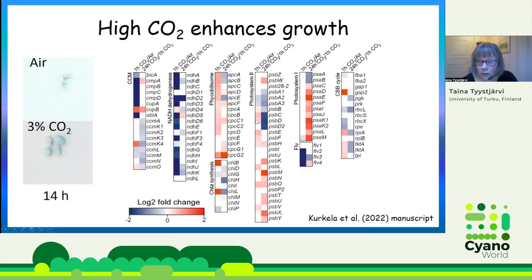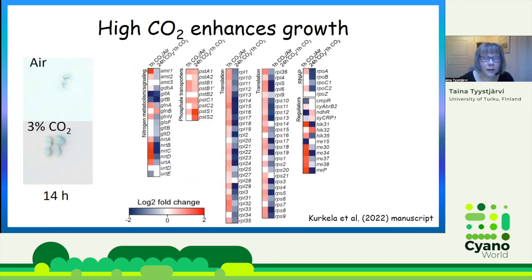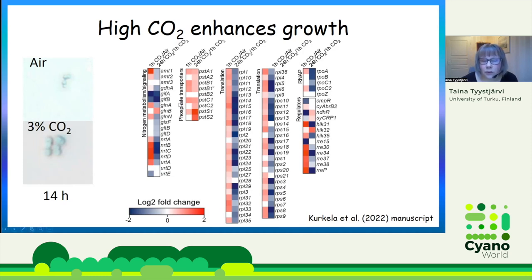Photosystem 2 genes were commonly upregulated. For the Calvin-Benson cycle enzymes and Gordon proteins, there were some differences but not very big ones. Nitrogen metabolism genes were first upregulated, but only transiently — after 24 hours in high CO2, the expression had returned to the original level. Phosphate transporters were upregulated, and translation and transcription machinery genes were also first highly upregulated, but then returned back to normal ambient air levels.